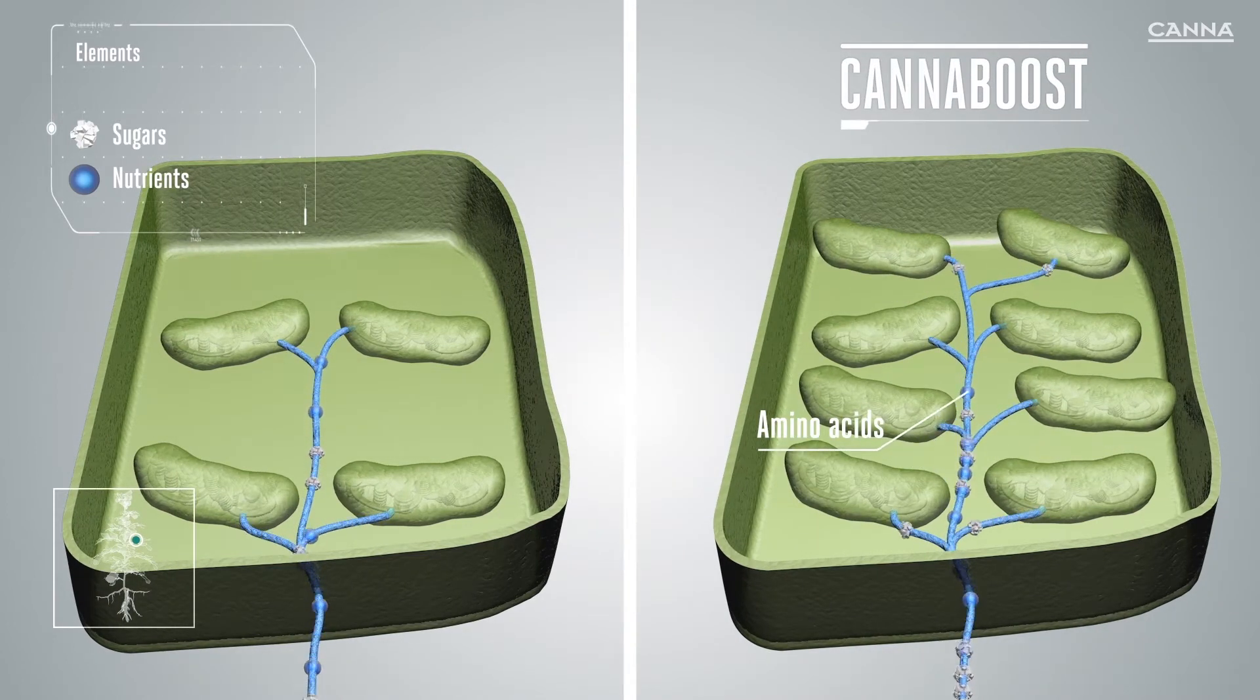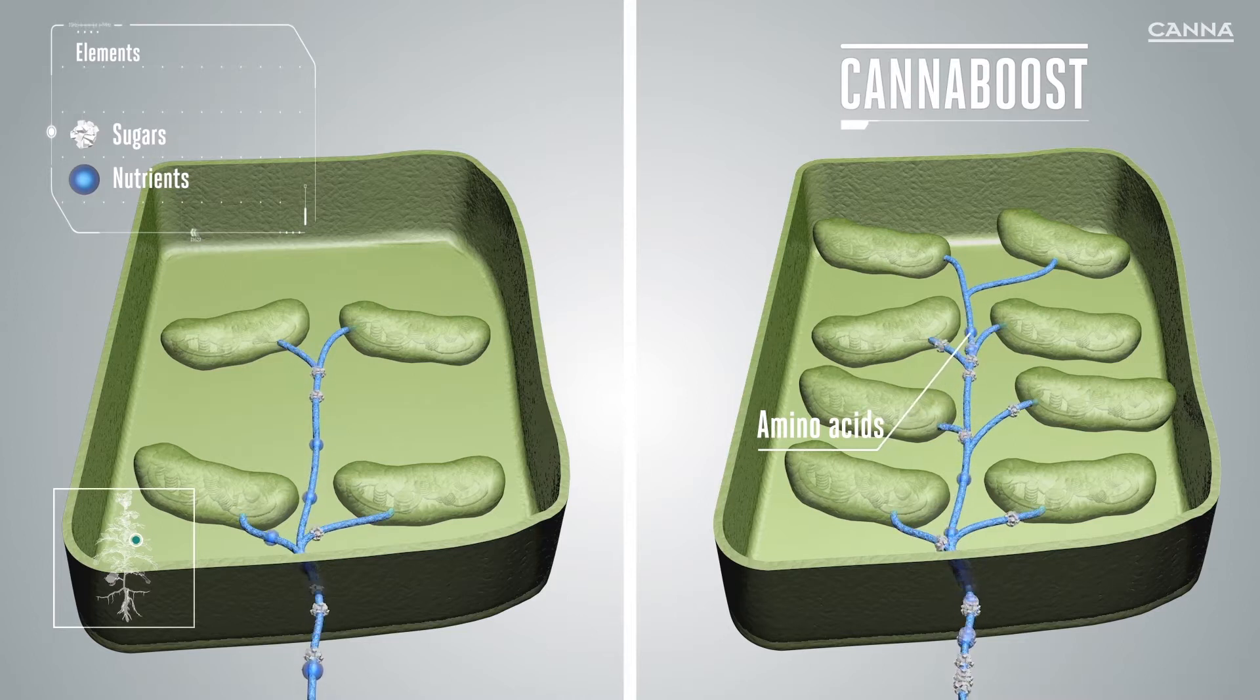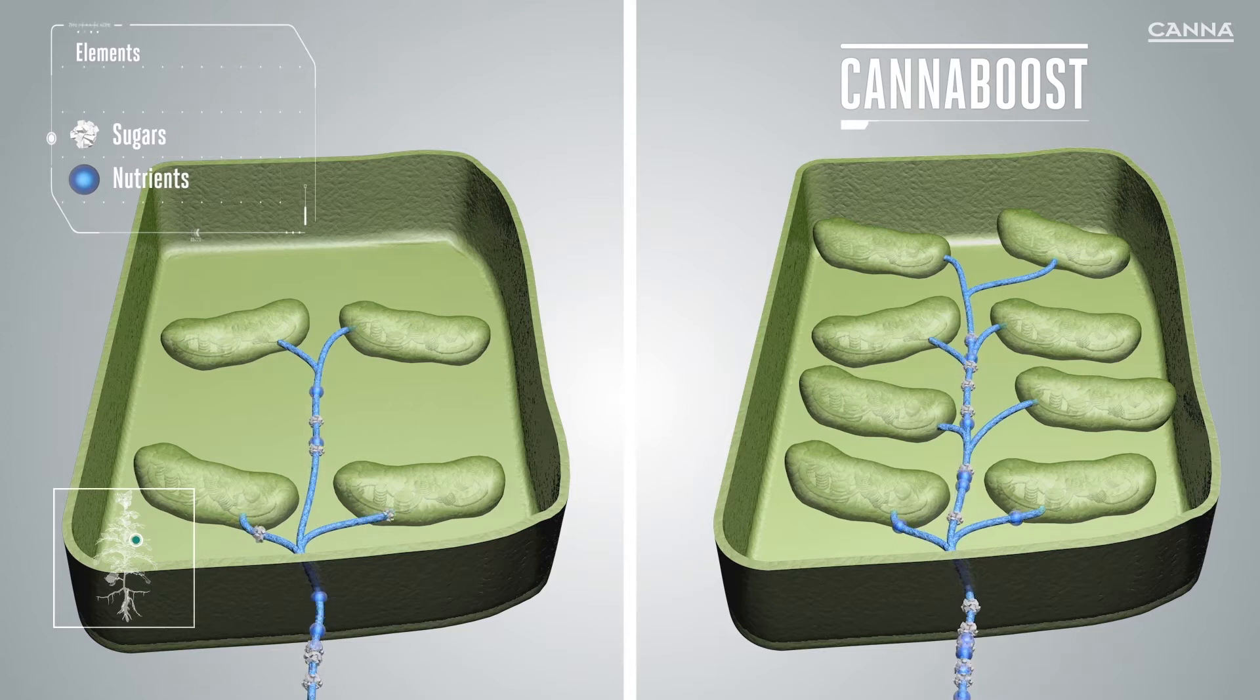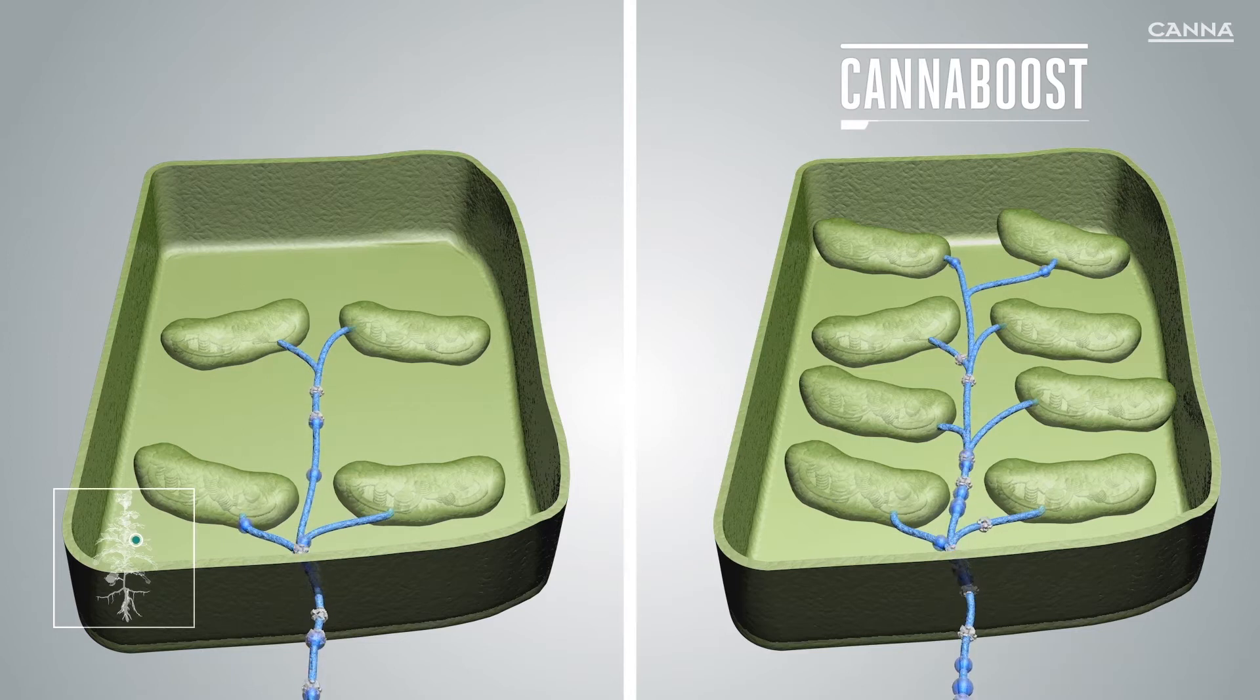The second function of Canna Boost is that it helps the plant produce more chlorophyll, which increases the rate of photosynthesis. This makes the leaves look greener and ensures that the flowers get more energy and building blocks in the form of carbohydrates.